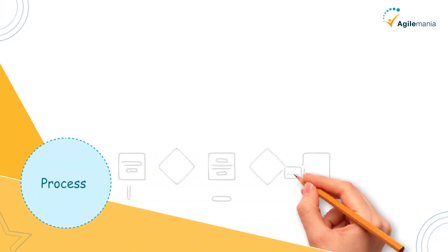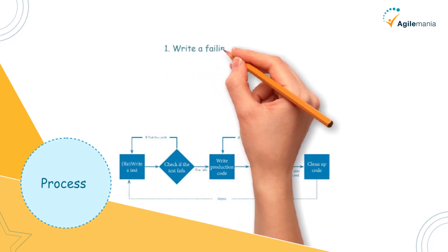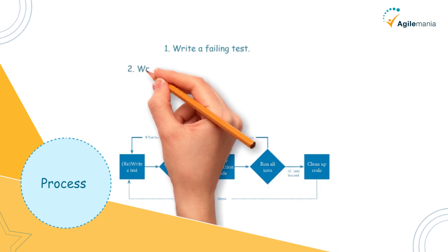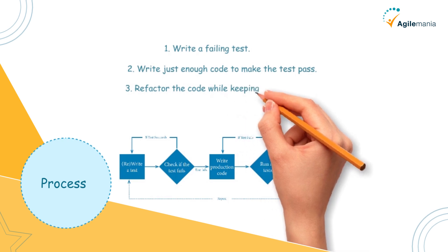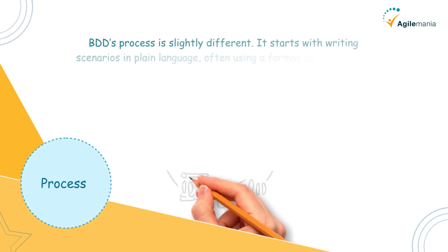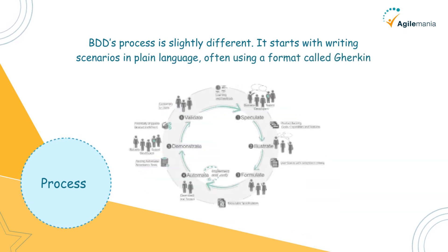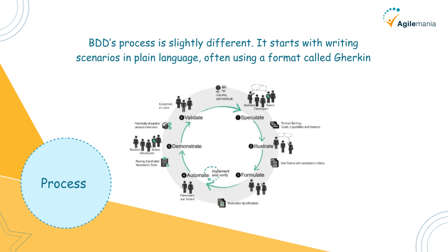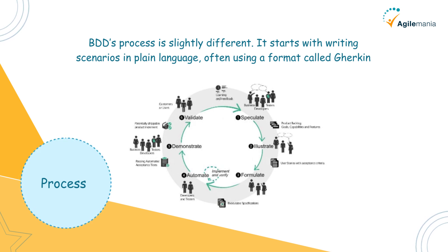The next aspect is process. Here's how TDD works in three steps: write a failing test, write just enough code to make the test pass, then refactor the code while keeping the test green. This cycle repeats for every feature. BDD's process is slightly different — it starts with writing scenarios in plain language, often using a format called Gherkin. These scenarios describe how the application should behave. Once the behavior is defined, developers and testers create automated tests based on these scenarios and ensure the application matches the expected behavior.